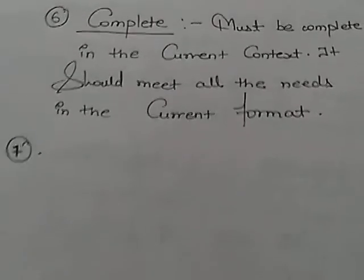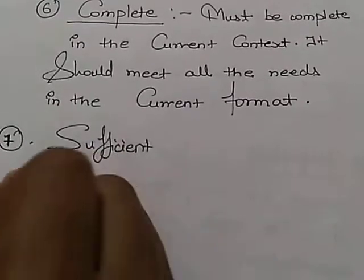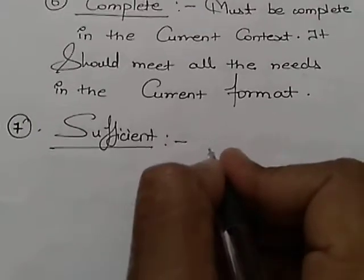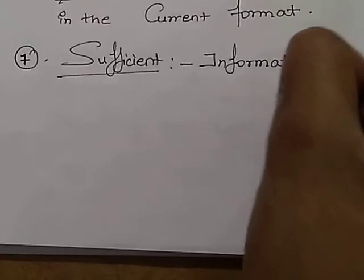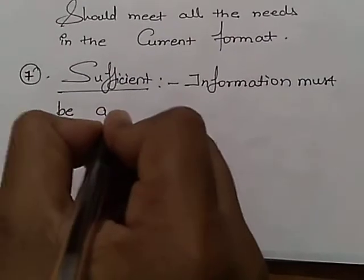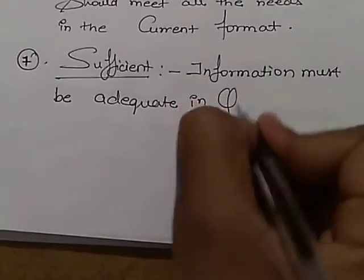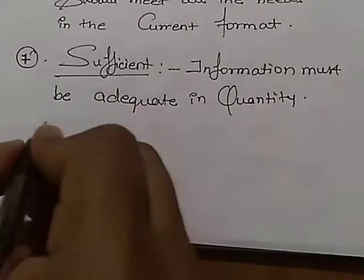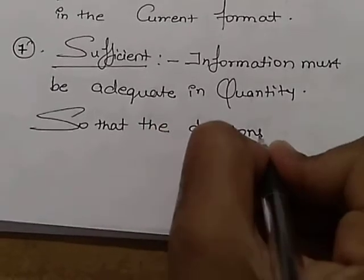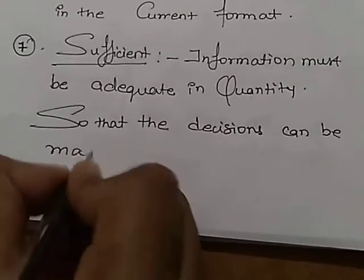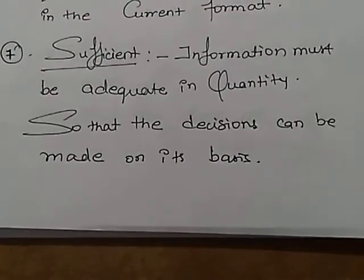The seventh characteristic is sufficient. We can say that the information must be adequate in quantity so that decisions can be made on its basis. Hope you understood this. Thank you very much.